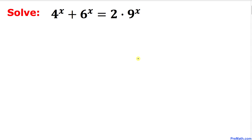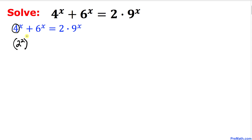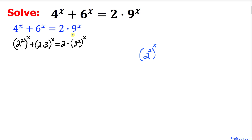Let's get started with the solution. We focus on the first term: 4 can be written as 2^2, then raised to the power x. The 6 can be written as 2 times 3, raised to the power x. And 9 can be written as 3^2, raised to the power x.